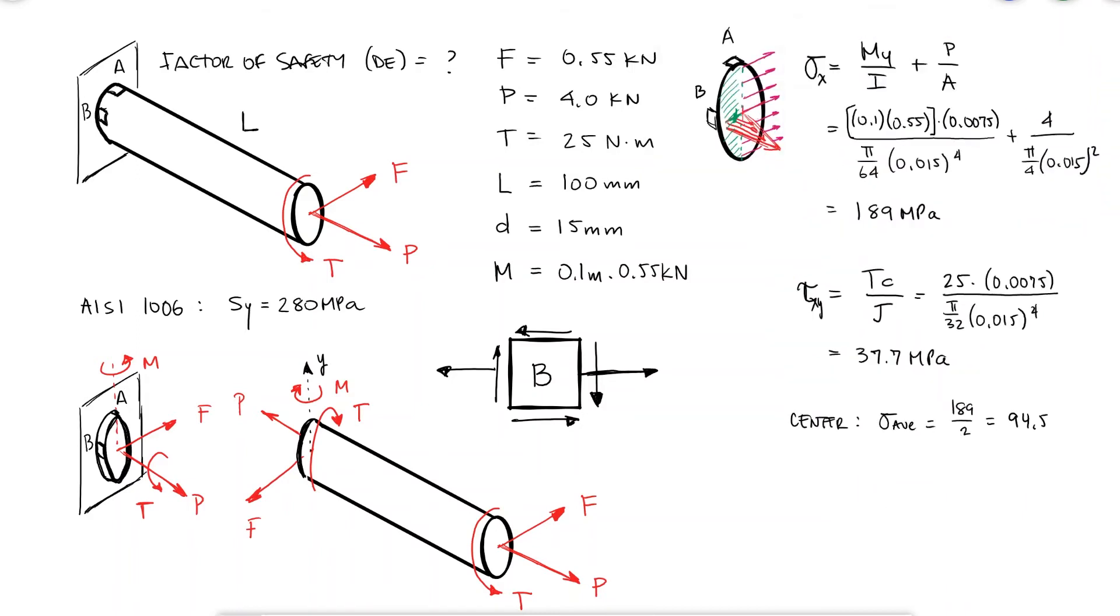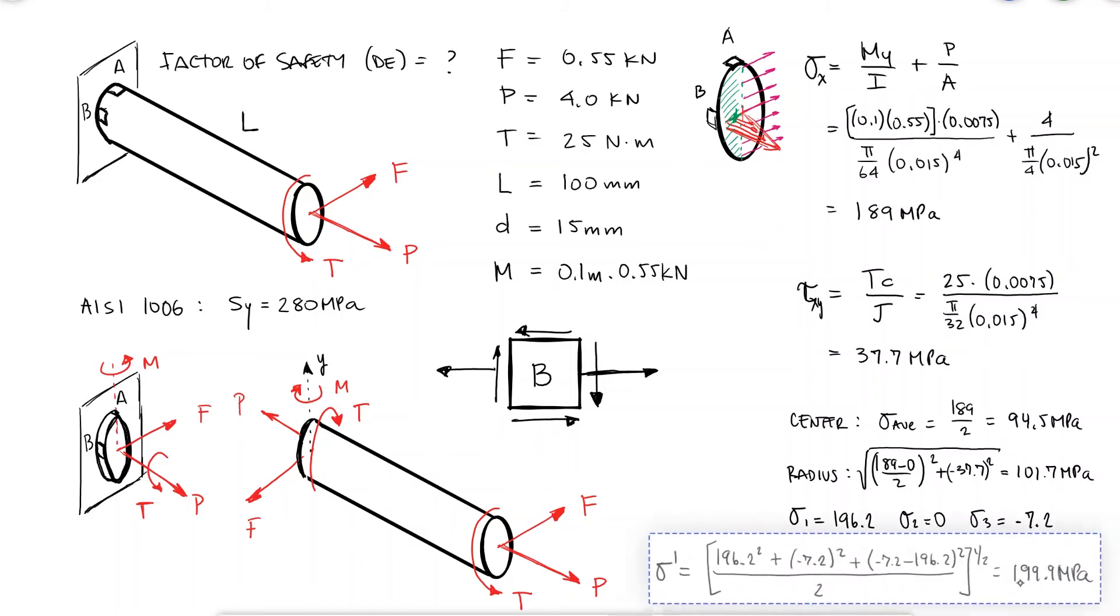With the values for the center and the radius of my Mohr's circle, I can find the principal stresses, which are what we need to calculate the von Mises stress and therefore the factor of safety. The factor of safety for the distortional energy theory would therefore be 1.4.